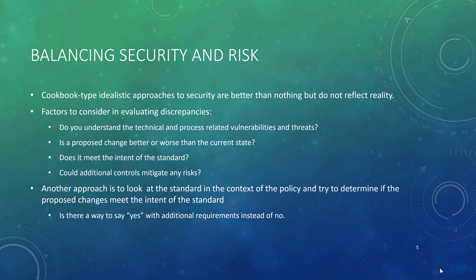What you need to do is go back out, do these security risk reviews, look at the standard, determine if you can do things that meet the intent of the standard, do things that improve the current state, and make this a constantly improving system. As you look at those discrepancies, make sure you understand the technical and process-related vulnerabilities and threats — can you make changes that make it better, or will it make it worse? Are the discrepancies not meeting the intent of the standard? Could additional controls help mitigate risk, make it easier for your customers, and lower that residual risk? Look at the standard in the context of the policy and determine if proposed changes meet the intent. If yes, say yes — don't say no unless you're forced to.